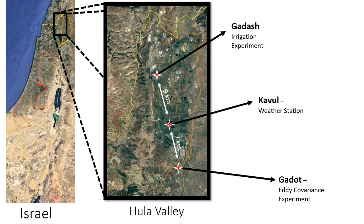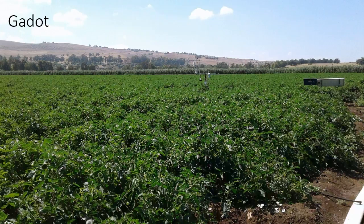In this picture, you can see the tomato field with the eddy covariance that will be used for reference.